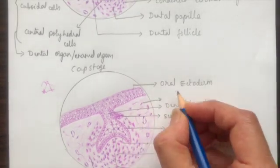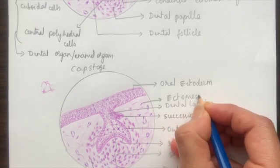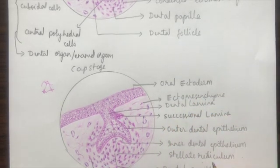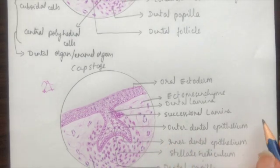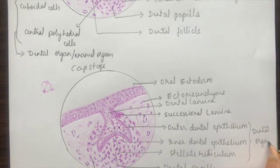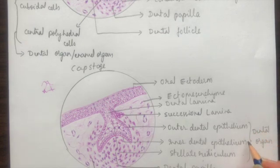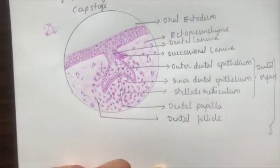The outer condensation will be the dental follicle cells or dental sac cells. This is the general ectomesenchyme — you can label that as well. The outer dental epithelium, inner dental epithelium, and stellate reticulum together form the enamel organ or dental organ. The dental organ plus the dental papilla and dental follicle together form the tooth germ.